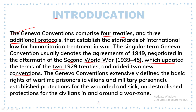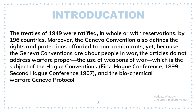The Geneva Conventions extensively defined the basic rights of wartime prisoners — that is, POWs — civilians and military persons, established protections for the wounded and sick, and established protections for civilians in and around the war zone. The treaties of 1949 were ratified in whole or with reservations by 196 countries.